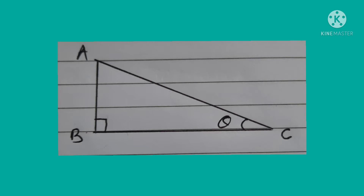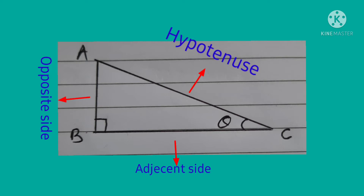In this triangle, one angle is a right angle and the other angle is an acute angle, shown by the symbol theta. In the right-angled triangle ABC, side AC is opposite to the right angle, so it is called the hypotenuse. Side AB is the opposite side with respect to angle theta, and side BC is the adjacent side with respect to angle theta.